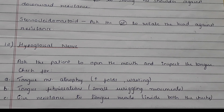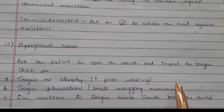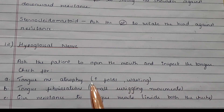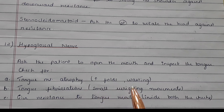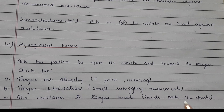Lastly, the twelfth cranial nerve is the hypoglossal nerve. Ask the patient to open the mouth and inspect the tongue. Check for tongue muscle atrophy — that is, increased folds or muscle wasting. Check for tongue fibrillations, which are small wriggling movements. Give resistance to the tongue movements inside both the cheeks from outside.